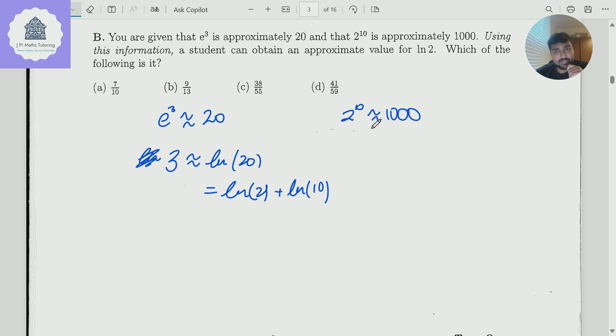Similarly here, if I use log rules on both sides, I take the logarithms and use some log rules. So 10 ln2 is approximately ln of 1,000. But remember, 1,000 is 10 to the power of 3, so this is just 3 ln10. Therefore, ln10 is approximately 10 over 3 ln2.